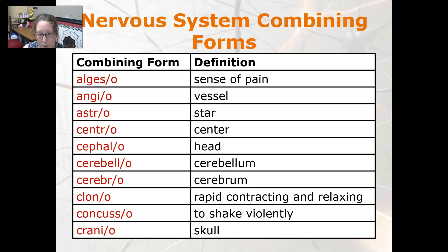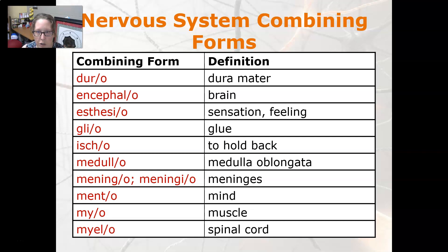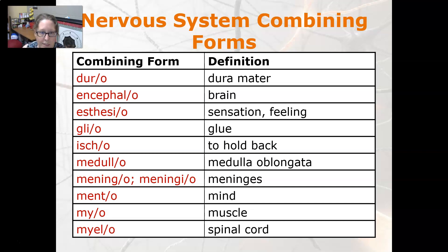Concusso is to shake violently, and cranio is skull, duro is dura mater, encephalo is the brain. Note that cephalo is head or skull, so encephalo means inside the head or skull. Esthesio is sensation or feeling — think anesthesia.